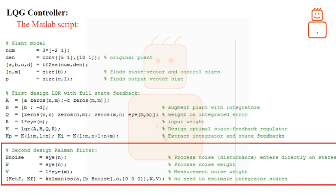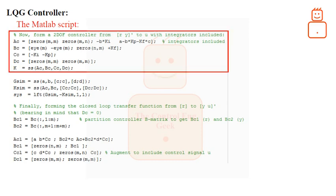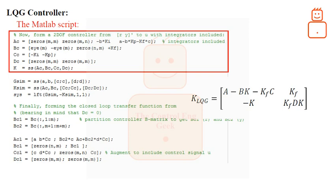Now let us jump into another part of the code where we are going to combine both the LQR controller and the Kalman filter. This is shown by the first portion of this part of the code. Note that we are using the following relation, which we have seen in the previous slides, in the realization of K_LQG.